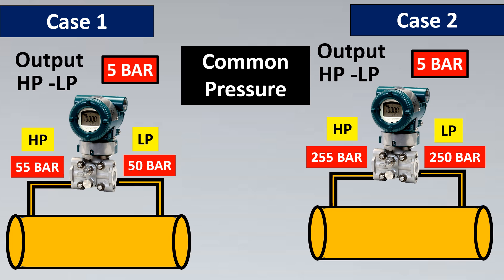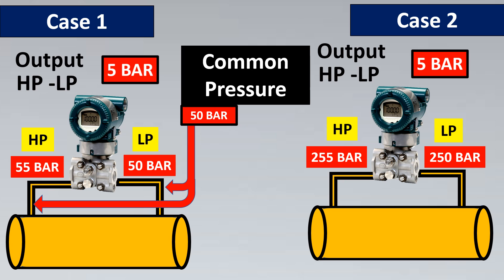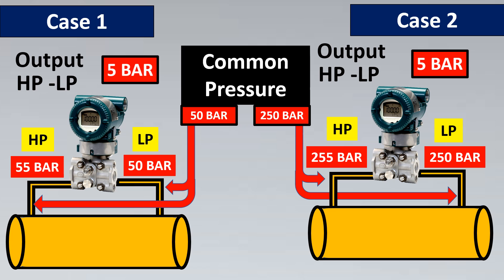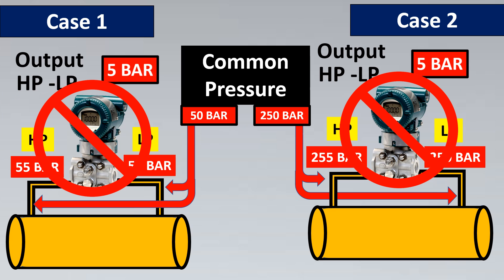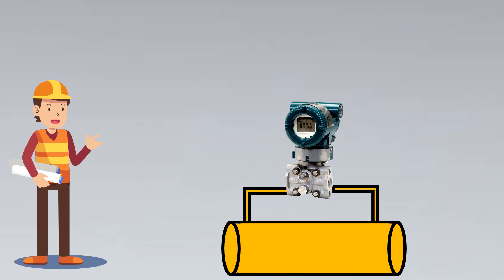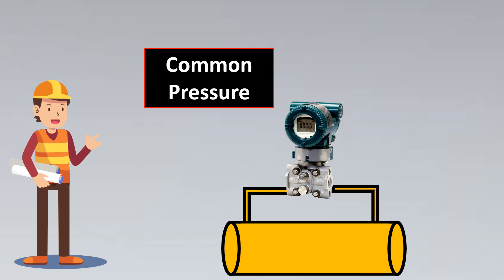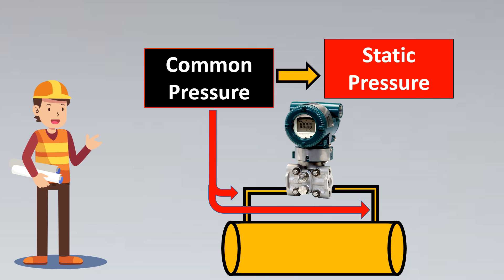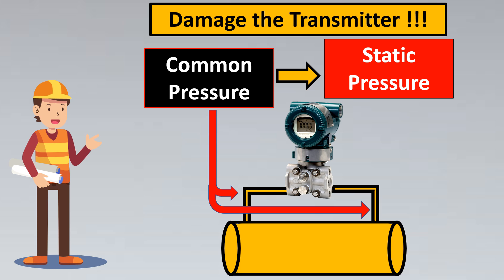There is something called common pressure. In the first case, 50 bar is commonly hitting both legs, while in the second case, 250 bar is hitting both legs. In the engineering world, this pressure that hits both legs of a DP transmitter simultaneously is called static pressure. This static pressure is very dangerous and can damage the transmitters.